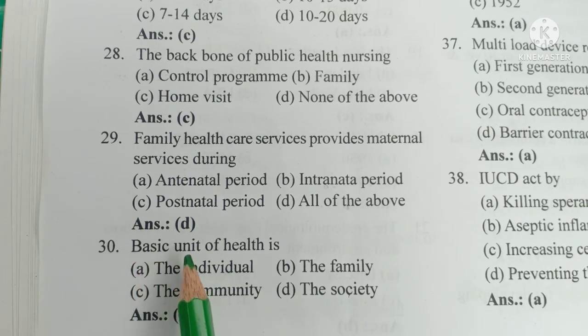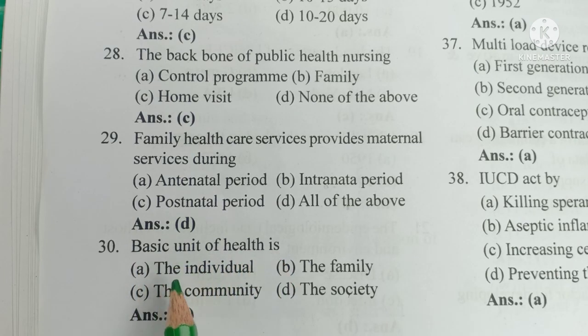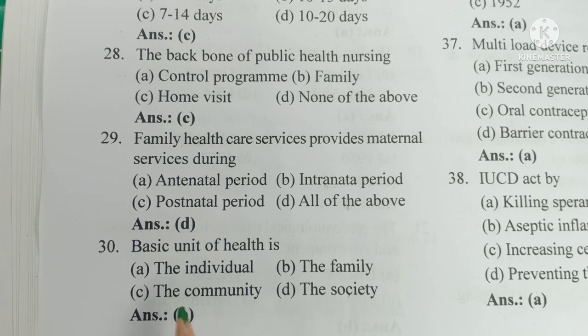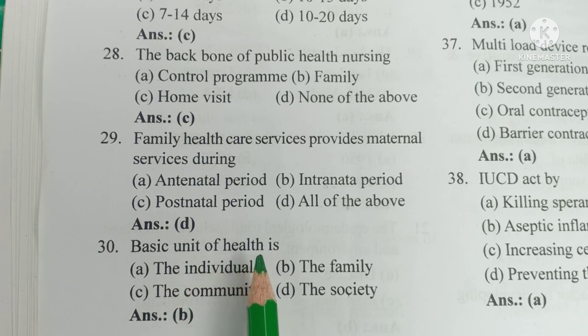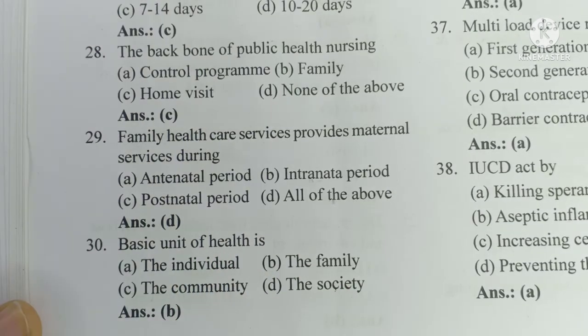Number 30. The basic unit of health is: A) the individual, B) the family, C) the community, D) the society. The answer is B — the basic unit of health is the family.